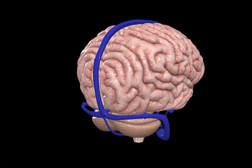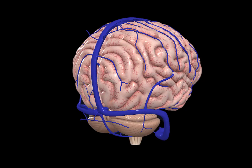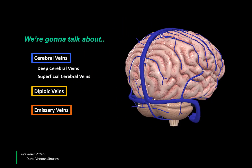In the last video, we covered the anatomy of the dural sinuses. Now let's go ahead and cover the rest of the veins supplying the structures of the brain. In this video, we're first going to talk about the cerebral veins, which include the deep cerebral veins and the superficial cerebral veins. Then we will talk briefly about the diploic veins and the emissary veins.